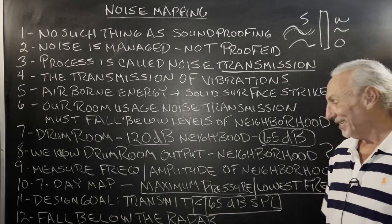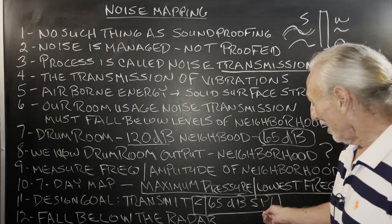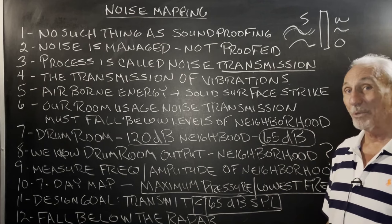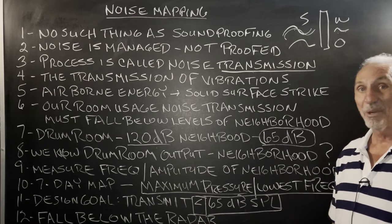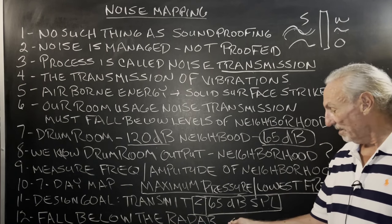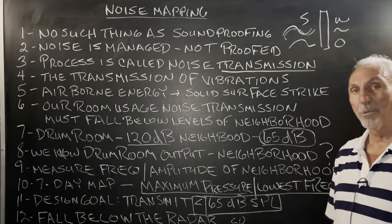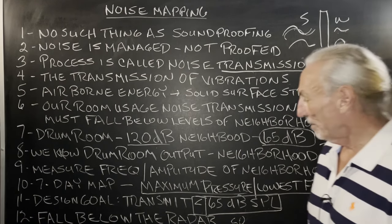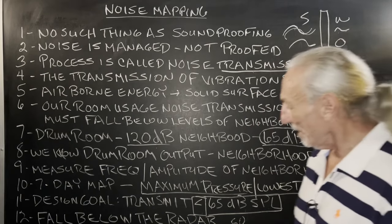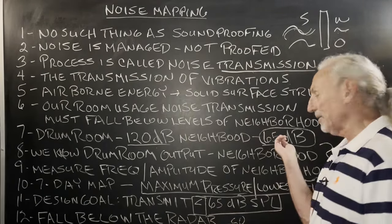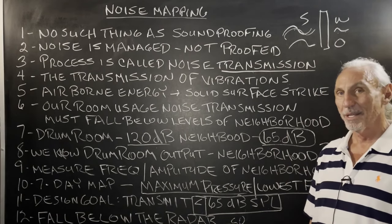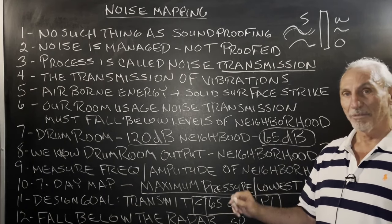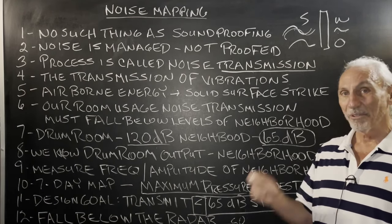So our goal, if the ambient noise level in the neighborhood is 65, is to make sure we don't output from our drum room anything greater than 65. I like to get down into the 50s — I like to fall about 20 points lower, because you never know. You want to build in a margin. Our goal is to fall below the radar. The radar is the noise level in the neighborhood. How do we do that? It's a series of different material types, different construction methodologies.